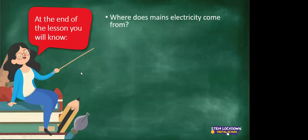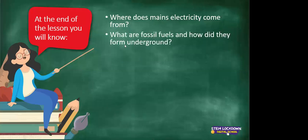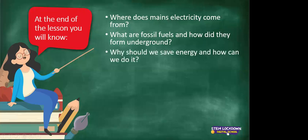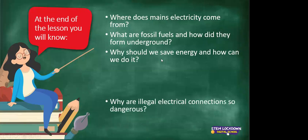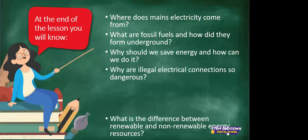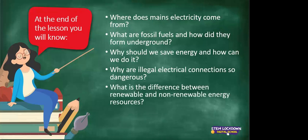At the end of the lesson, we are going to discuss the mains of electricity and where it comes from. We are going to learn about fossil fuels and how they form underground. We will discuss why energy matters and how we can save it, why illegal electrical connections are dangerous, and the differences between renewable and non-renewable energy. It will be a lengthy lesson continuing throughout this week, so do tune in every day.